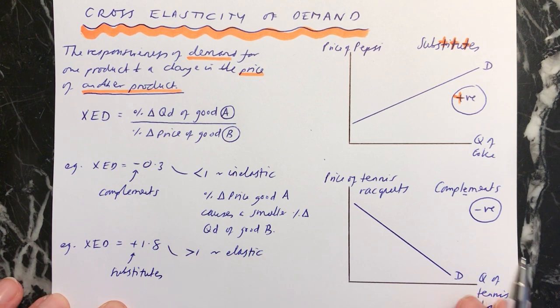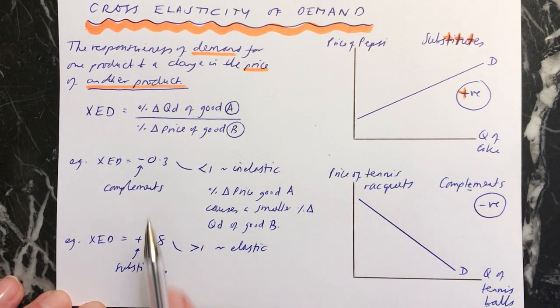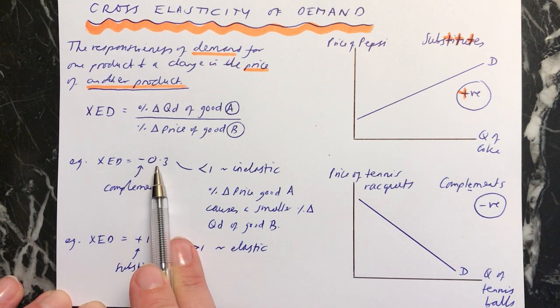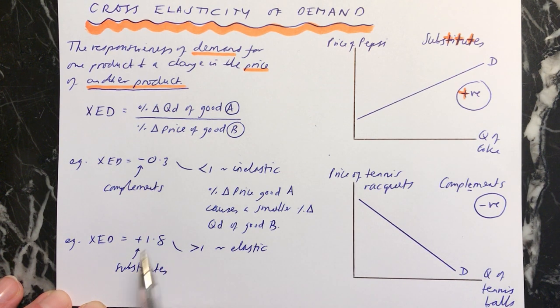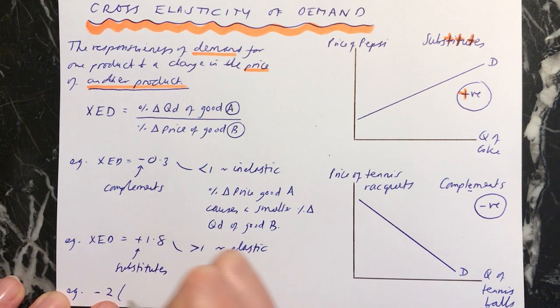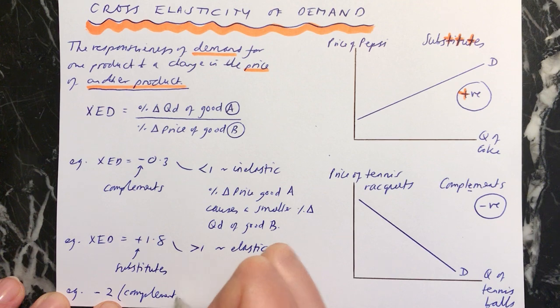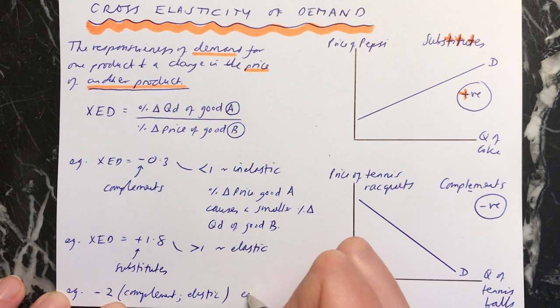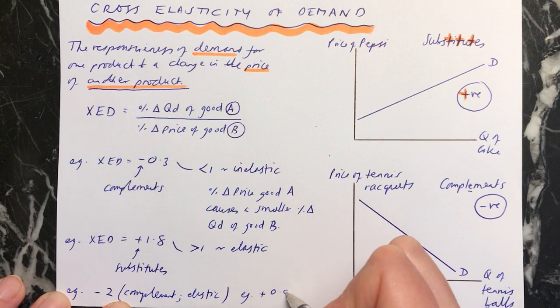You can do this for any values. You can see whether the goods are complements or substitutes, and you can see whether it's inelastic or elastic. If I just do two more here. If it was negative 2, we'd know that this was a complement, and greater than 1, we know that it's elastic. And the last one, if it's positive 0.9, we know because it's positive, they are substitutes.